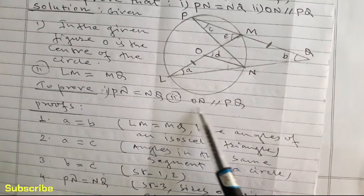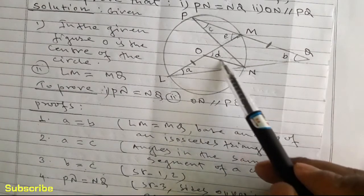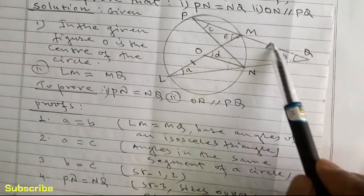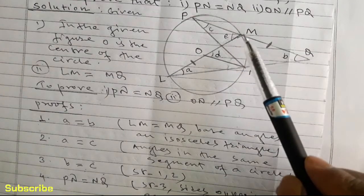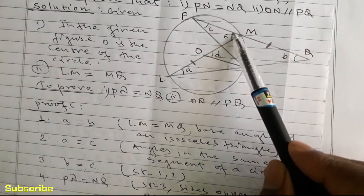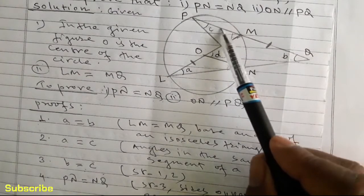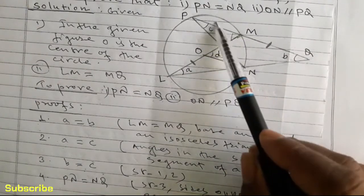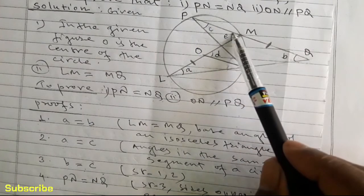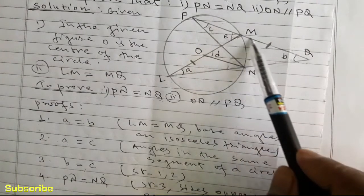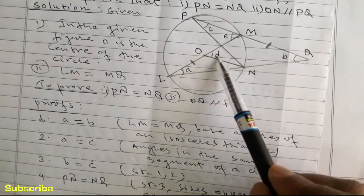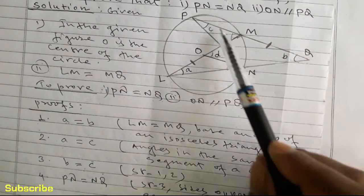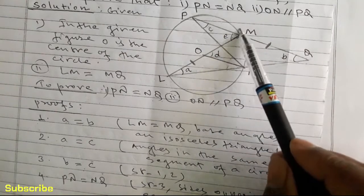Now let us show ON is parallel to PQ. In order to show ON parallel to PQ, we will show angle D is equal to angle E. If the alternate angles are equal, then we can write PQ parallel to ON. So let us show angle D is equal to angle E — these are the alternate angles.